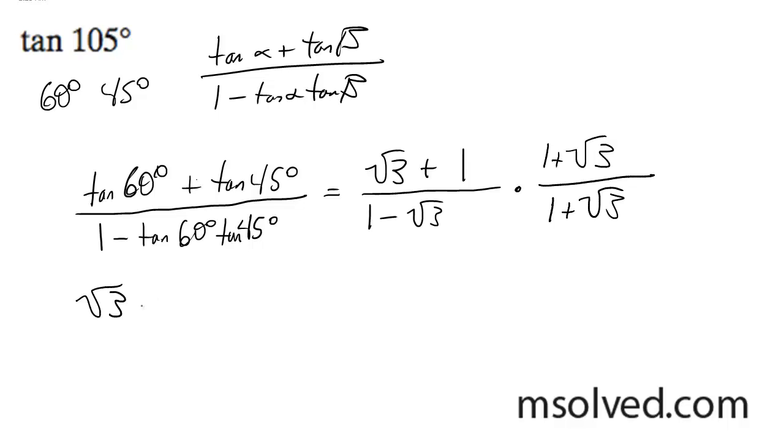root 3 plus 3 plus 1 plus root 3. The bottom becomes 1 plus root 3 minus root 3 minus 3.